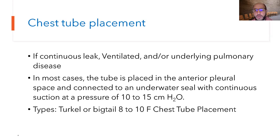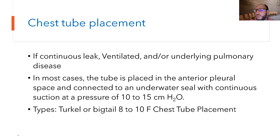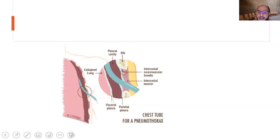For chest tube placement, the landmark is the fourth to fifth intercostal space, anterior axillary line. Connect with an underwater seal with continuous suction — in tiny babies use minus 10 to 15 cm water; in full-term babies, minus 20 cm water. We have three types of chest tubes: the traditional chest tube, the pigtail (8 to 10 French), and the circle. Always stick your needle just above the upper part of the lower rib to avoid the intercostal neurovascular bundle.